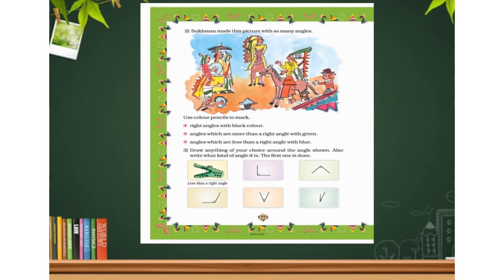Another activity: Sukhman made a picture with many angles. You have to identify three main types of angles — 90 degrees, less than 90 degrees, and more than 90 degrees — and mark them with different colors. Mark 90-degree angles in black, more than 90 degrees in green, and less than 90 degrees in blue.